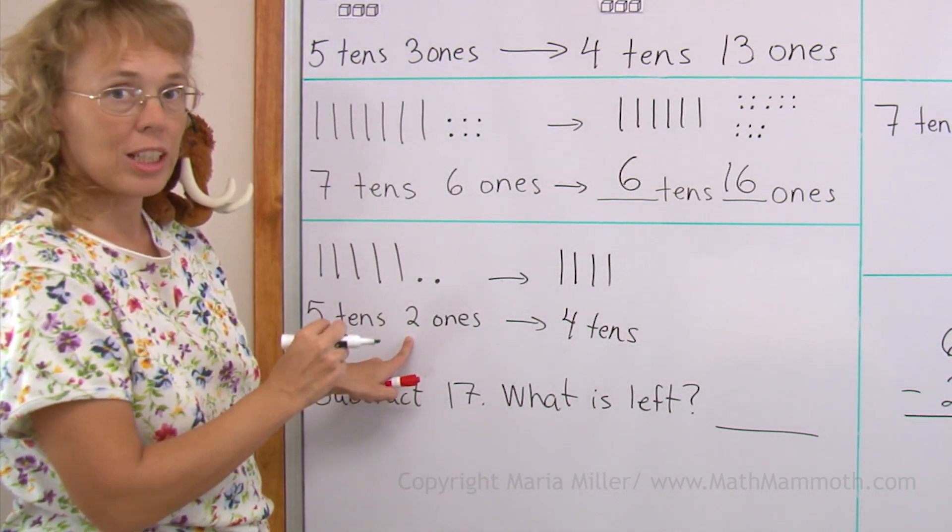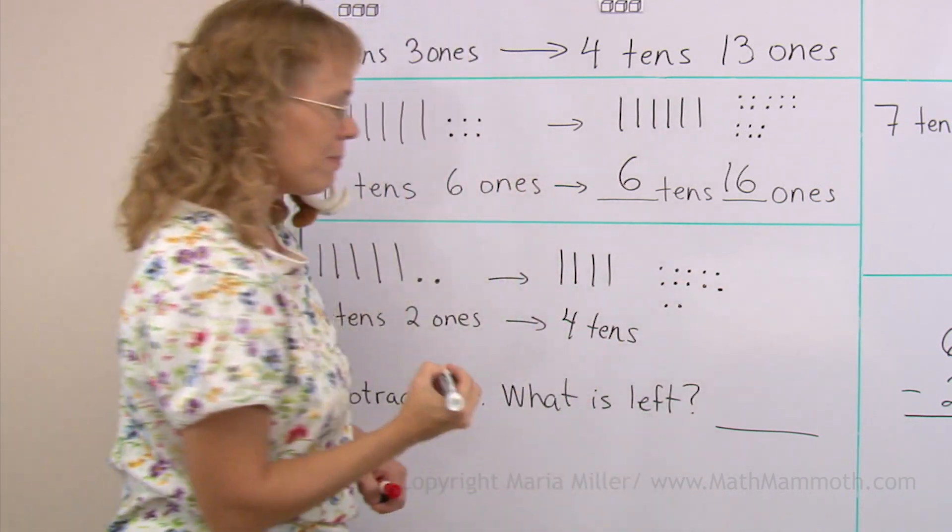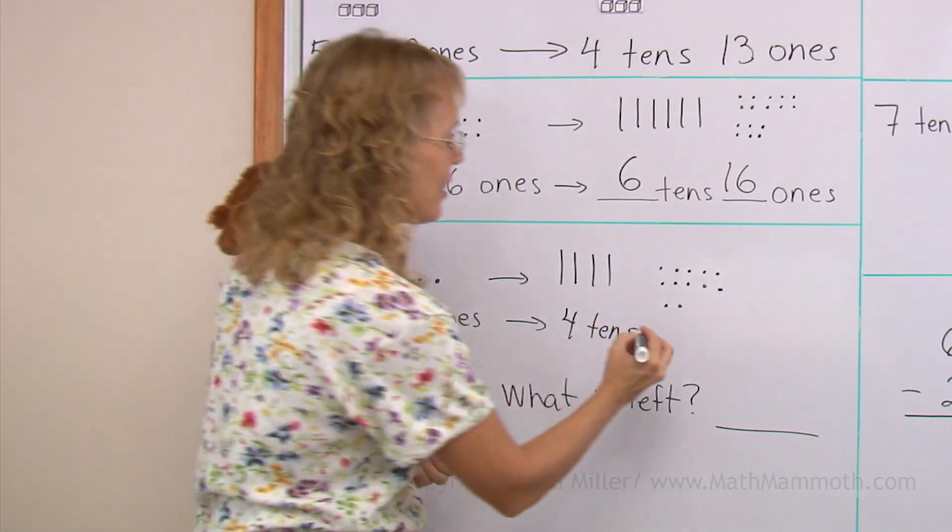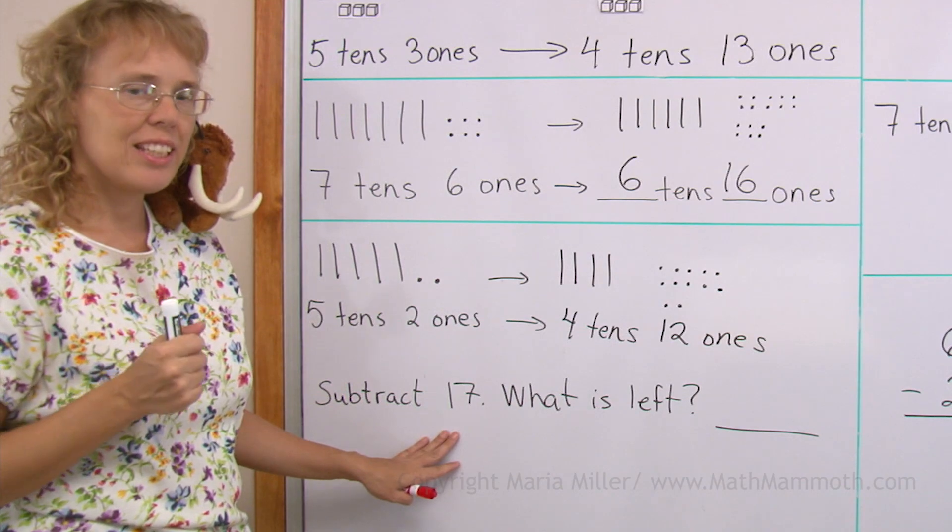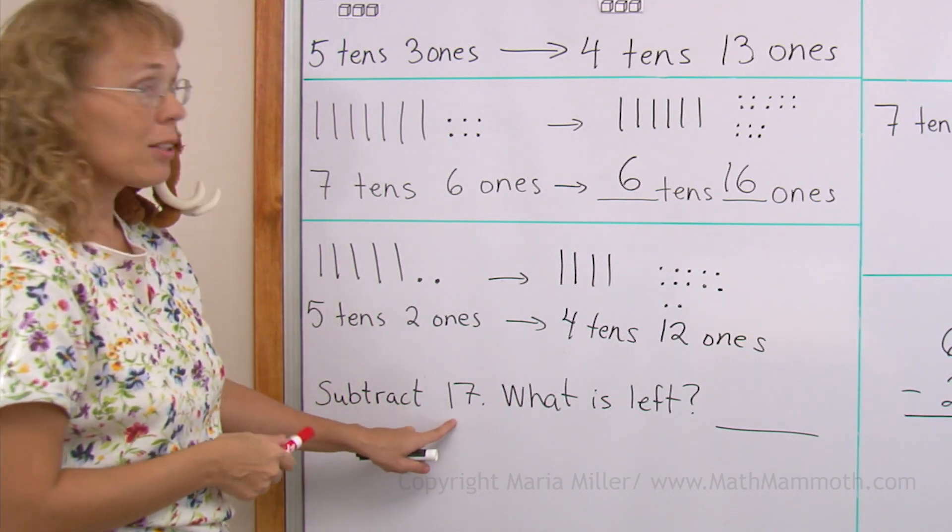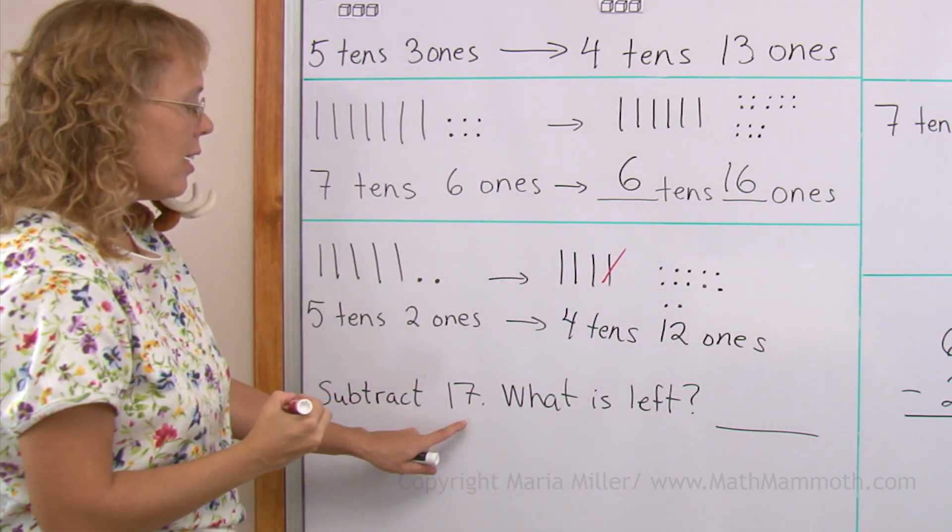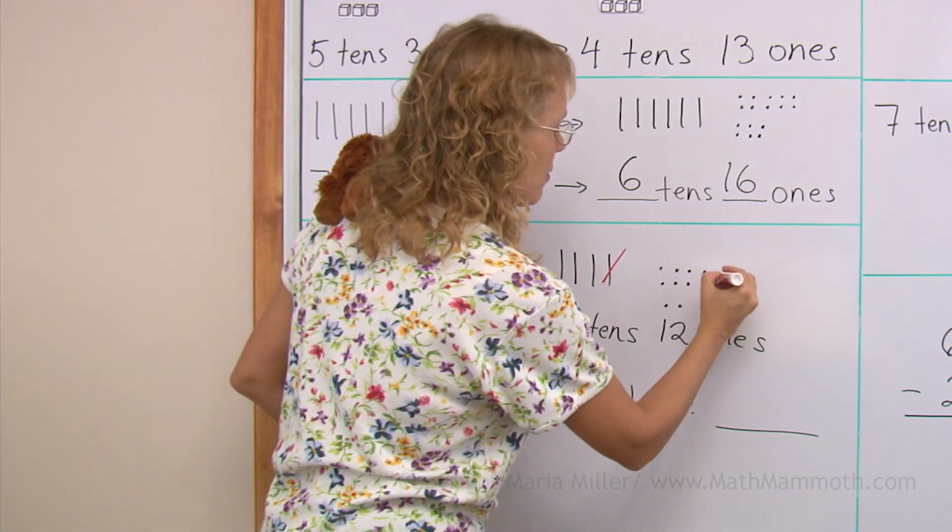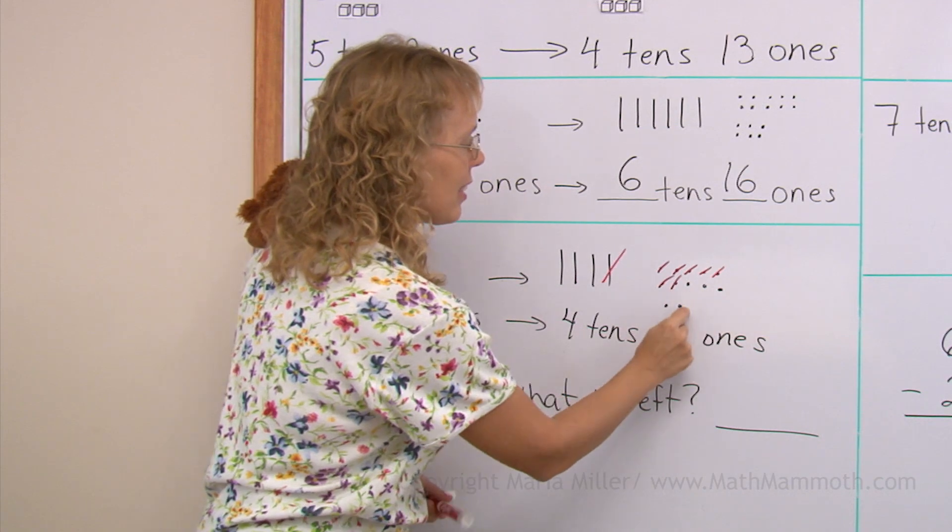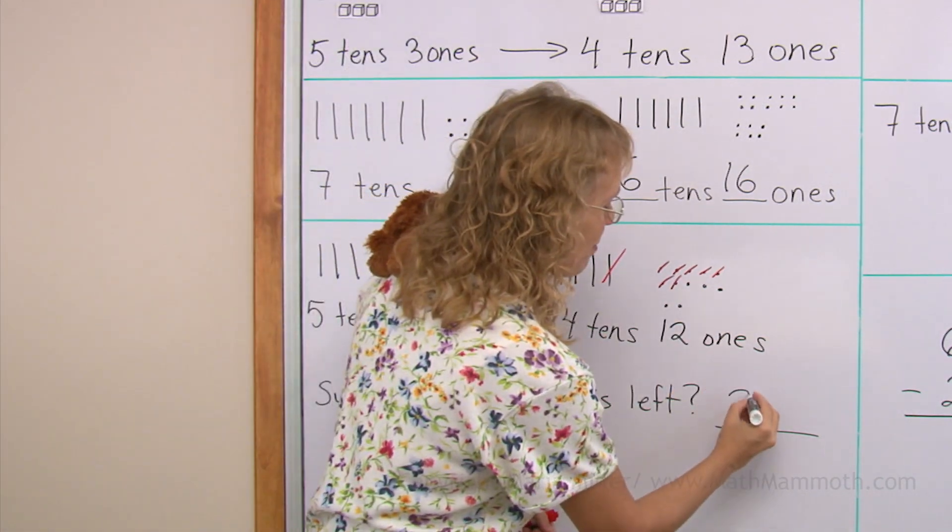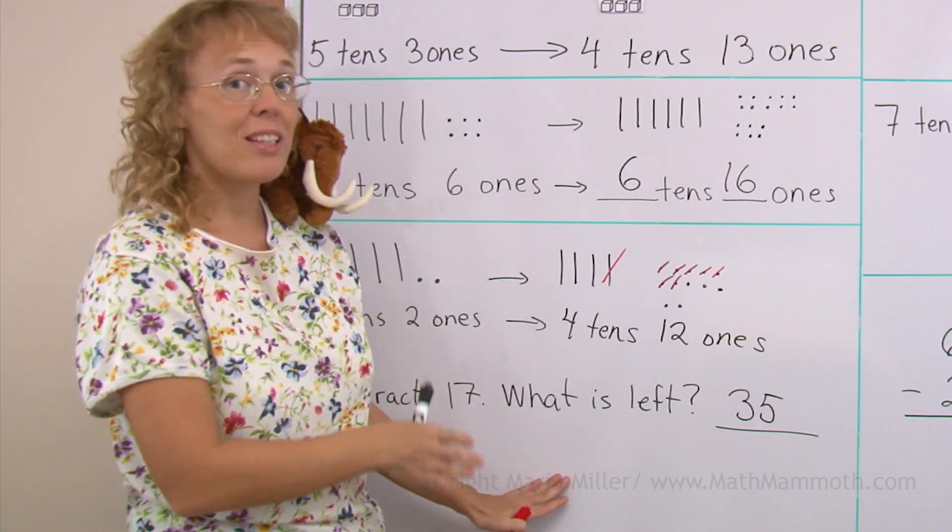Instead of two little dots or ones, I will get ten new ones. And the two are still there. So a total of twelve, right? Now, subtract seventeen. Subtract one ten and seven. So I will subtract or cross out one ten from here and seven of these little dots. And there. So what is left? Three tens and five ones. Or thirty-five. So this is the process of subtracting with regrouping.